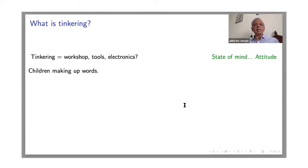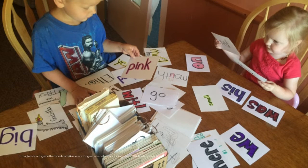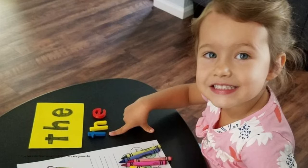If you have a child who is making up words—children make up lots of words, probably scrumptious is a word that is made up by children—I think children are tinkering with language. So that is completely acceptable as tinkering.